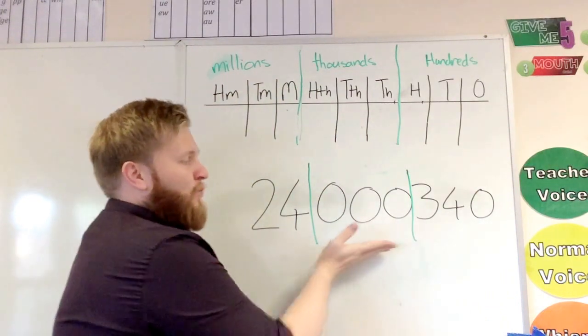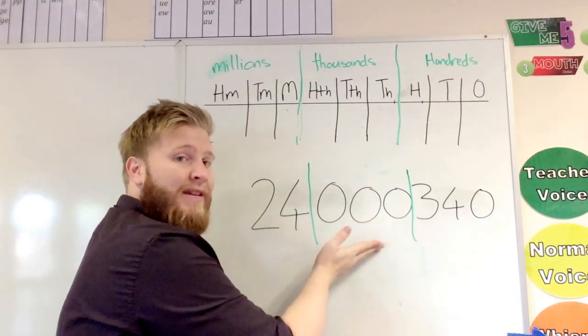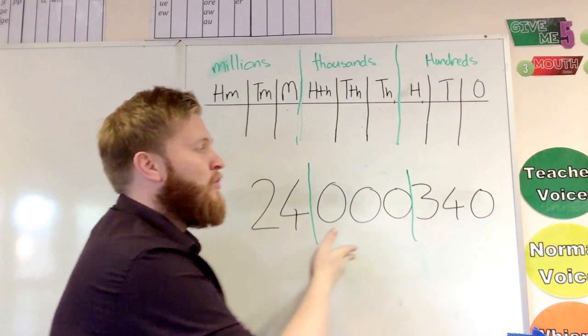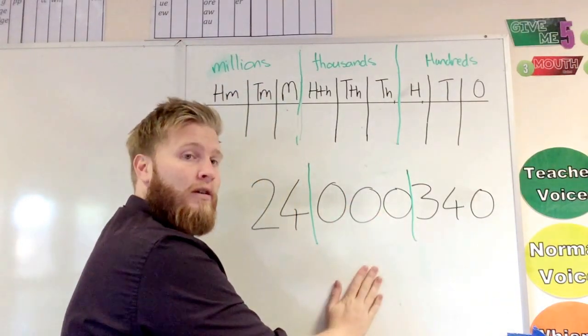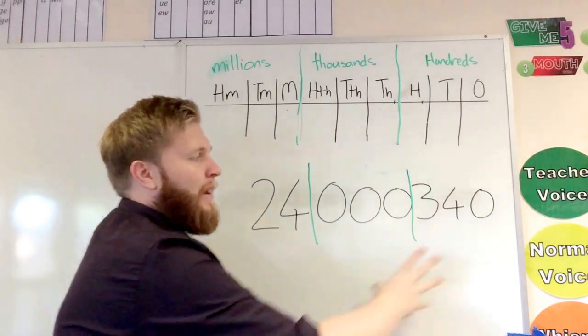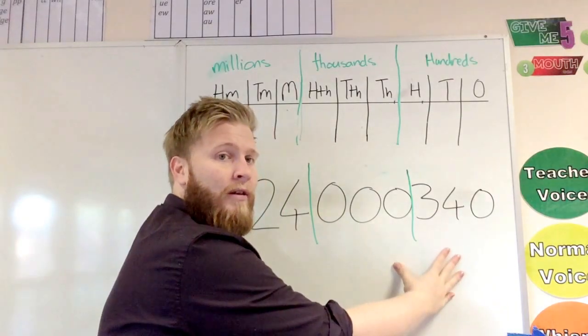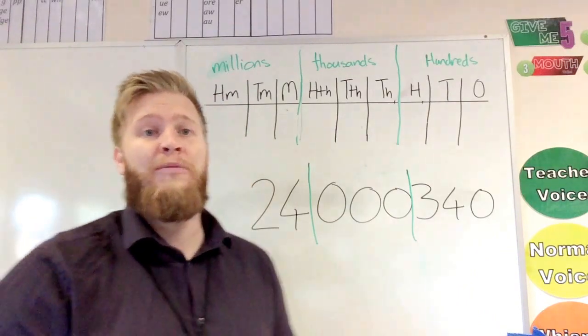Okay, now I'm just putting this one up there to remind you, when we say numbers we don't say 24 million, no thousand, 340. If there's nothing in that section, we would just ignore it. So we'd say 24 million, 340, which means that you're saying your numbers in the right way.